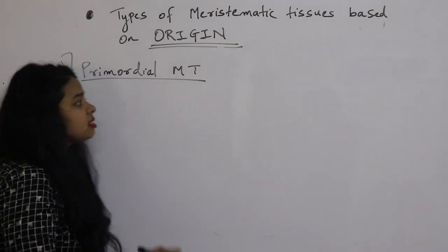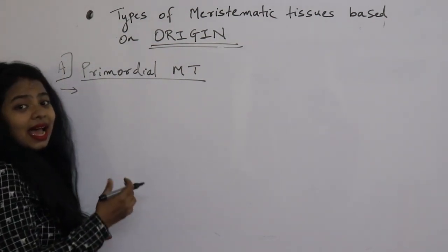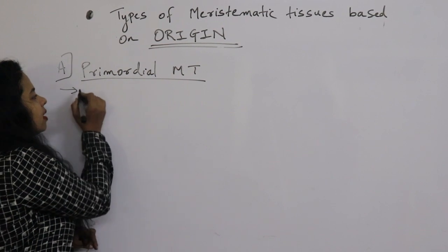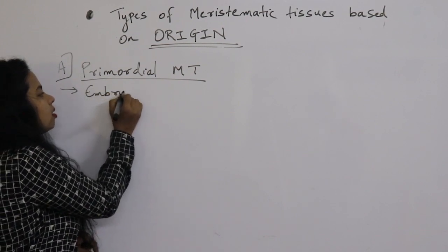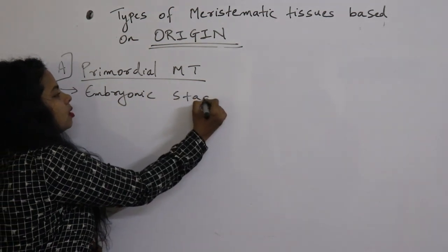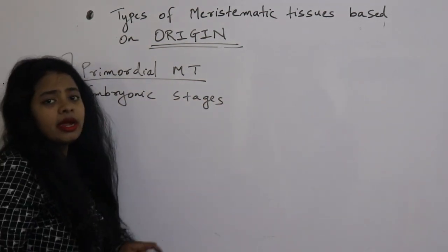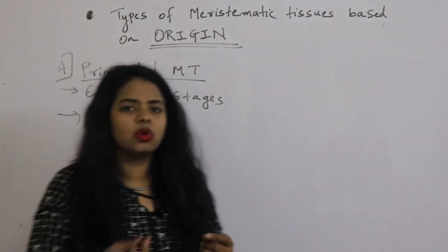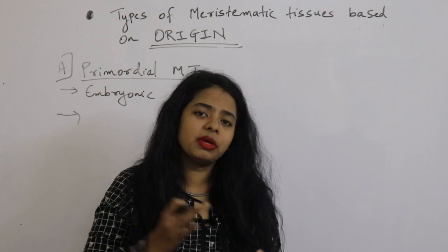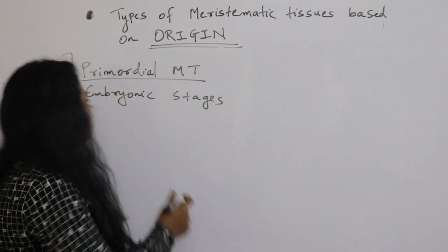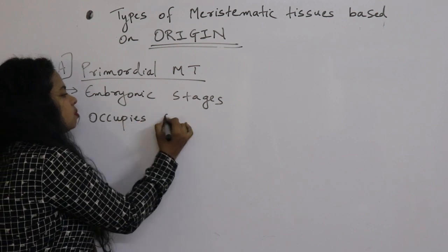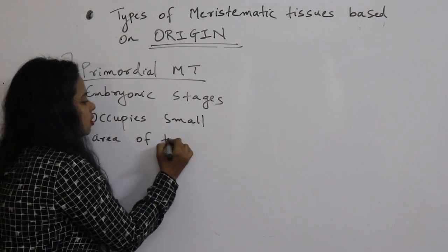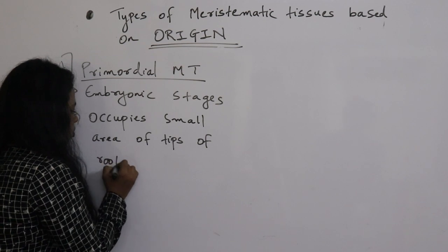Primordial meristematic tissue is present at the embryonic stage of the plant. So when the plant is young, this type of meristematic tissue is present — at embryonic stages. It occupies a very small area of the tip of roots and shoots, because tips consist of young cells, and meristematic tissue is made up of young cells.